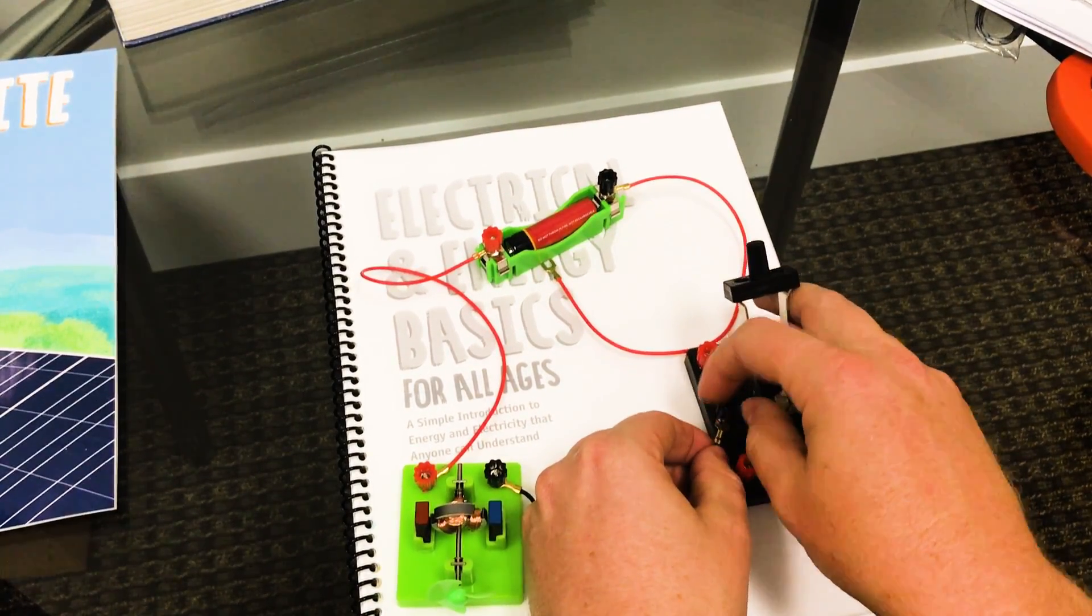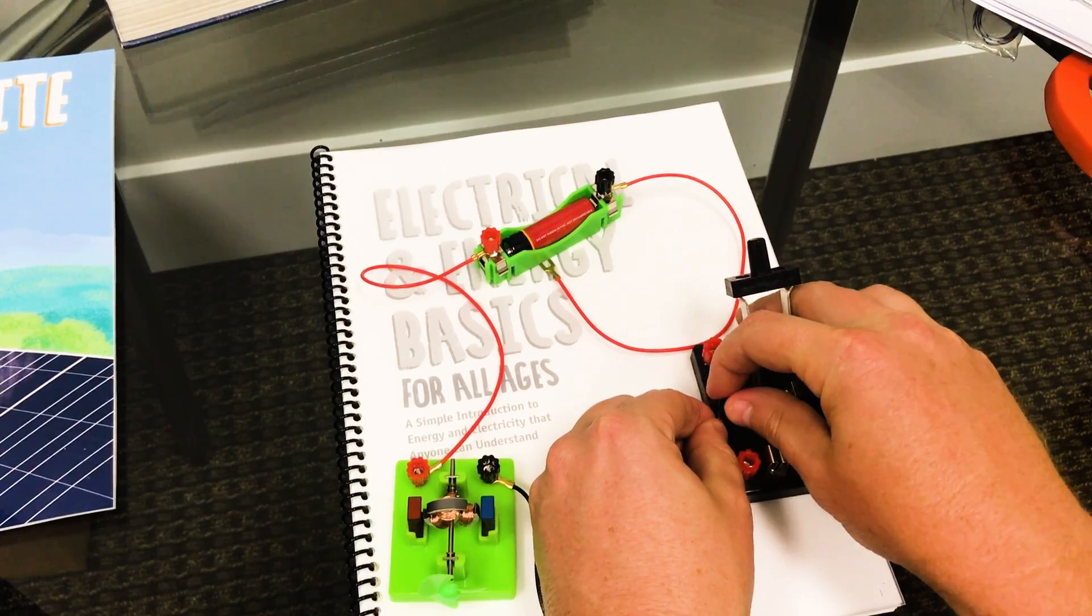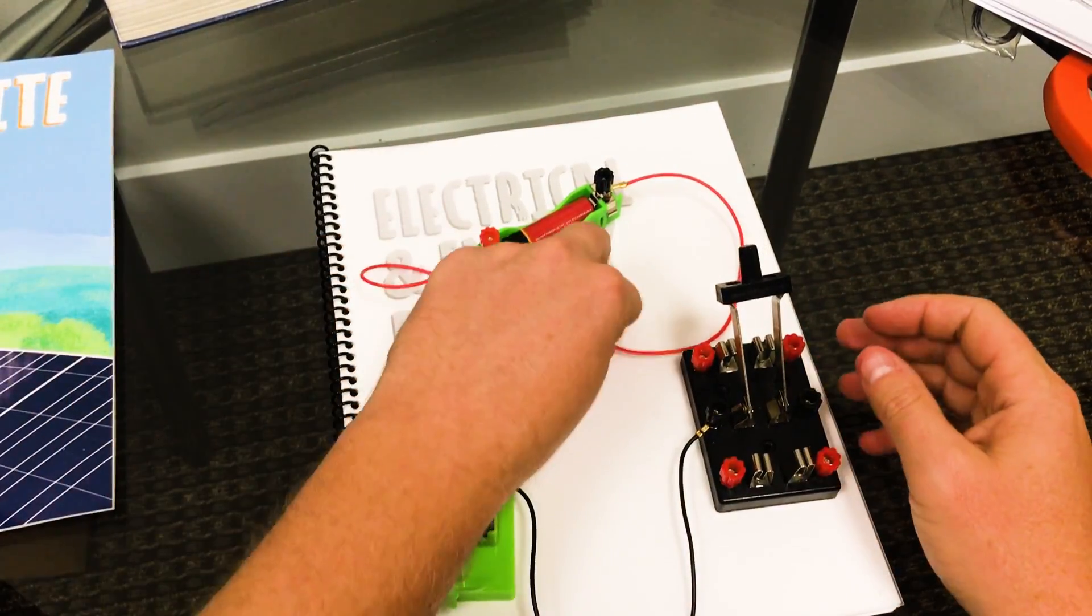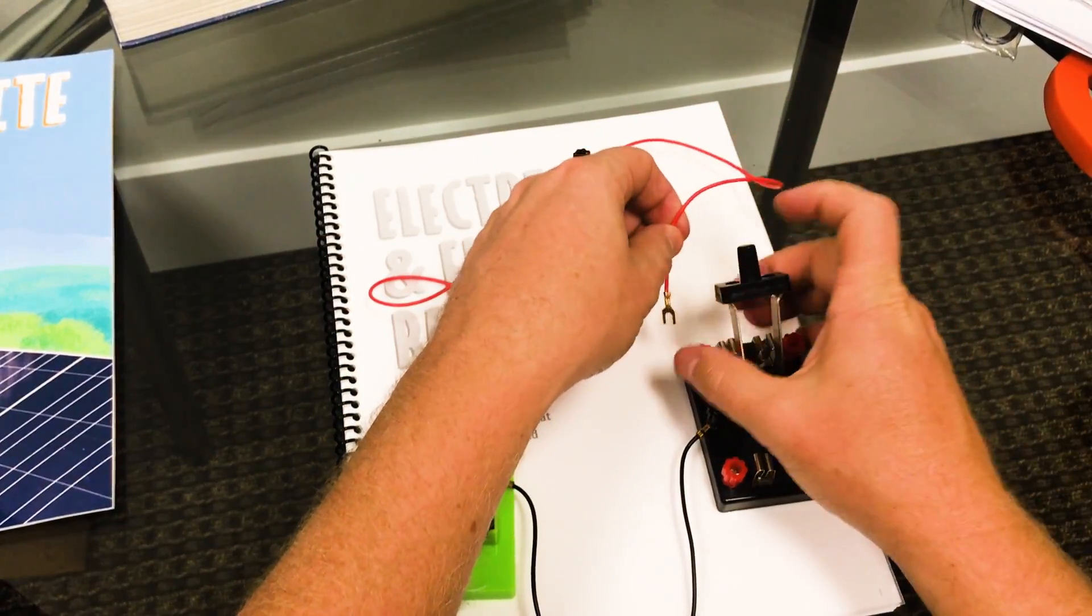This is actually a double pole, double throw switch, kind of similar to a 9340 relay. For those of you who've used one of those, it can go in either direction.